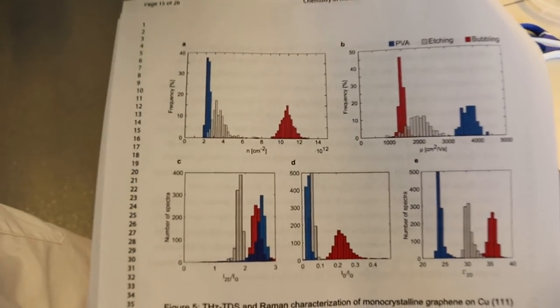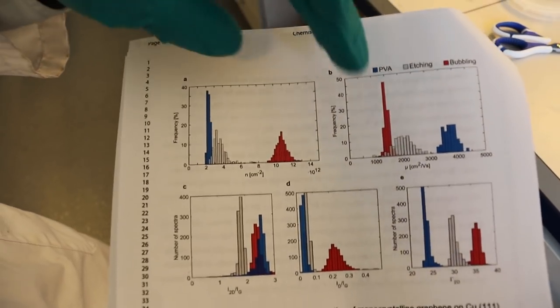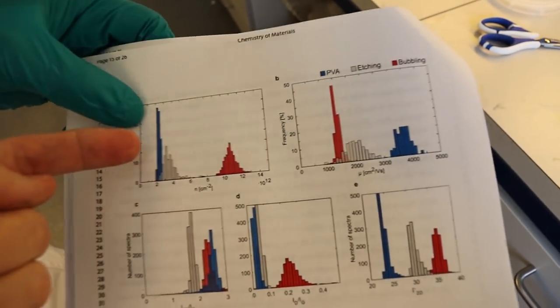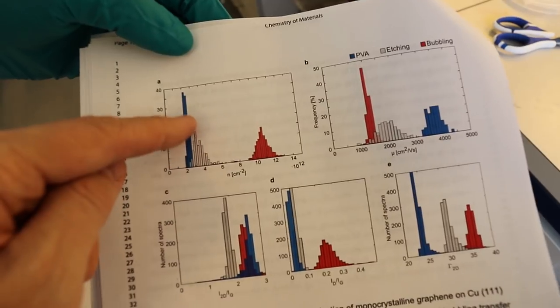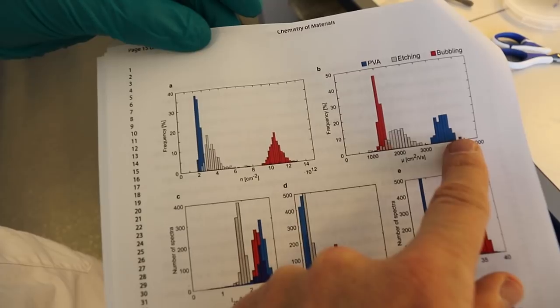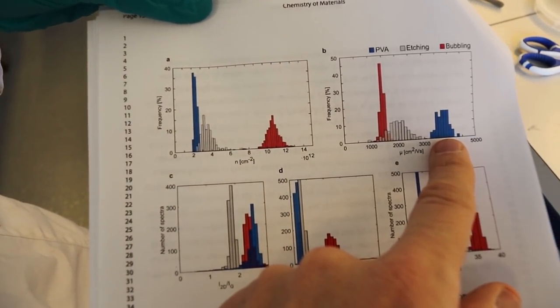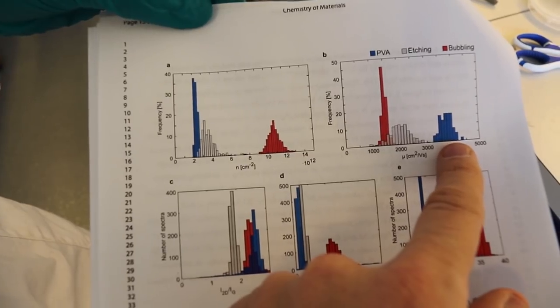So in this figure, what you're seeing is terahertz conductance maps, extracted mobility and carrier density. So you see the doping is low for the blue, which is the PVA transfer. And the mobility is pretty high, much higher than the other methods, twice as high as the two other methods.